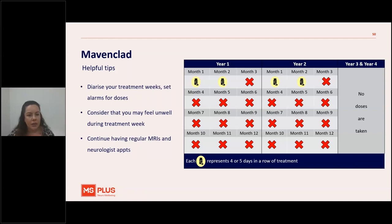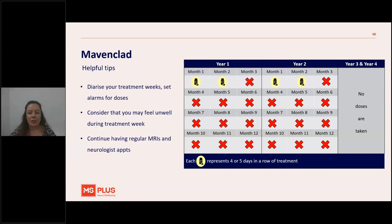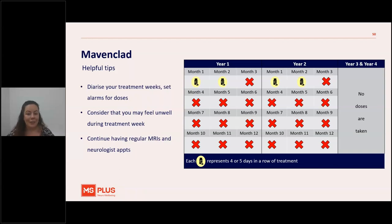Even when you've finished Mavenclad in years one or two and you're in years three or four, you still need to attend regular MRIs and neurologist appointments. In months one and two of years one and two you take tablets, with no other treatment needed for the rest of those years, and years three and four require no treatment. However, if there is breakthrough disease activity — such as new lesions or relapses in year three or four — doctors can give you more Mavenclad if needed, or switch you to another drug. In theory the drug covers you for four years, which is why continuing with medical care is really important.